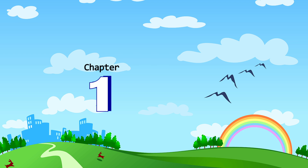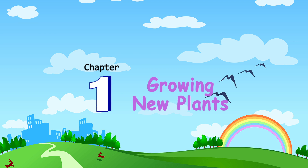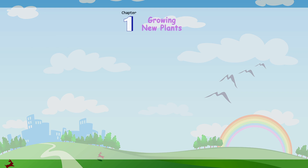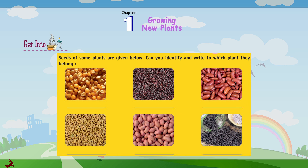Chapter 1: Growing New Plants. Seeds of some plants are given below. Can you identify and write to which plant they belong?